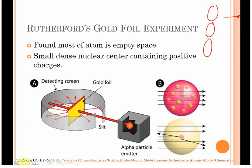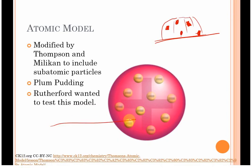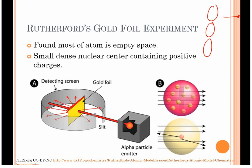If this model held, every time you tried to shoot something through, almost all of them should come back. They shouldn't be able to go through. They're going to be hitting the electrons and not able to go anywhere. It would look like this. He couldn't go through.